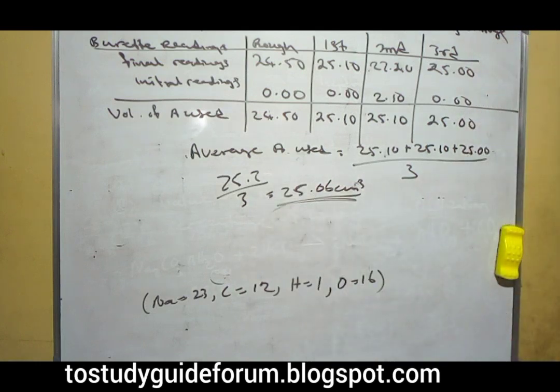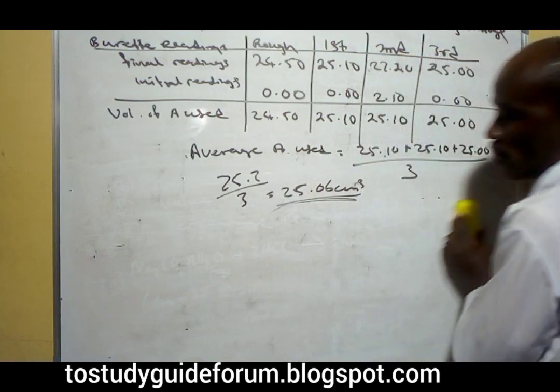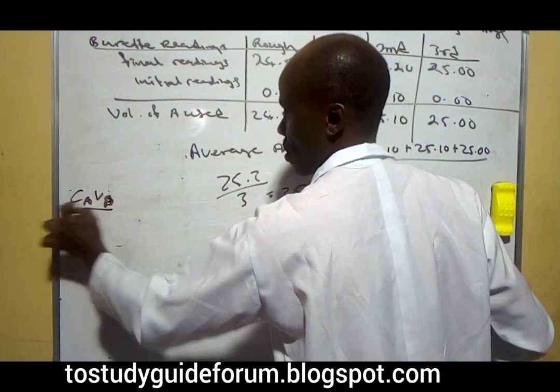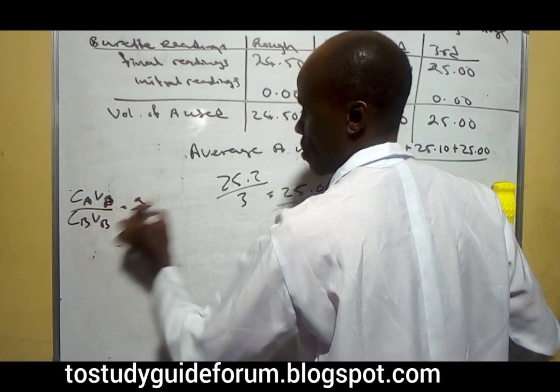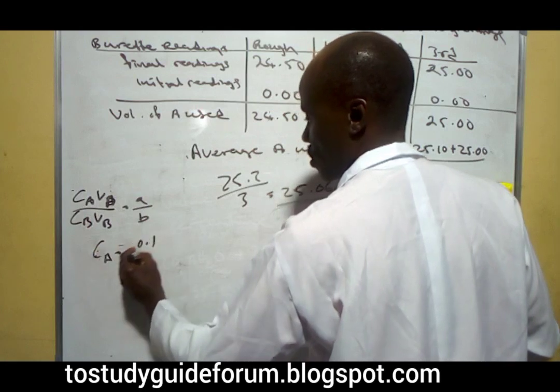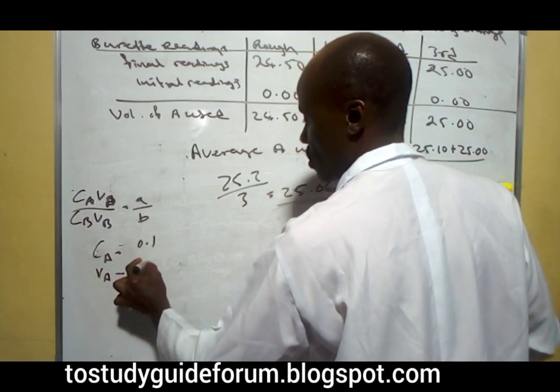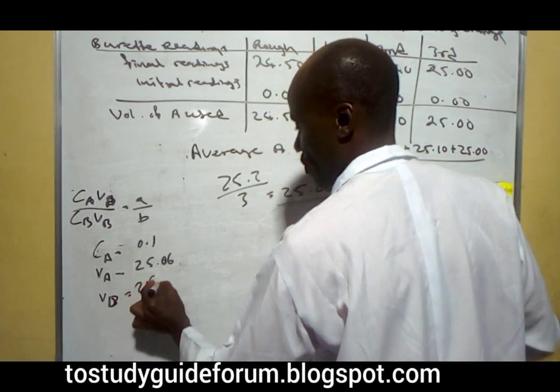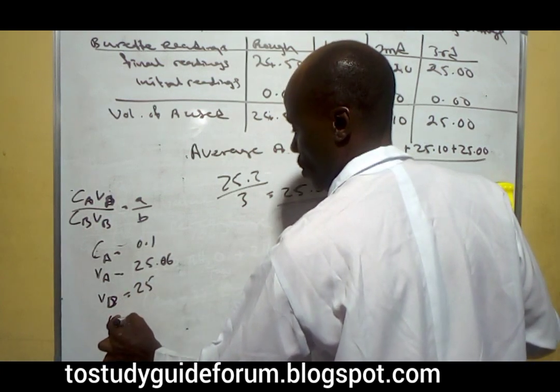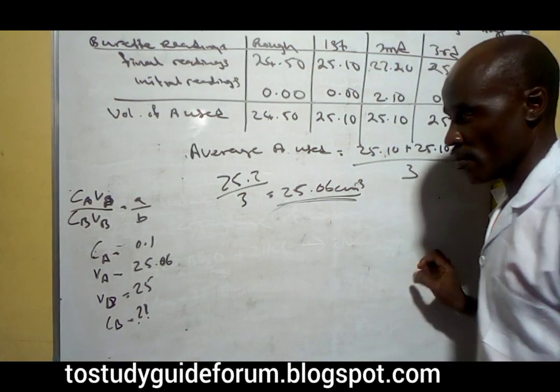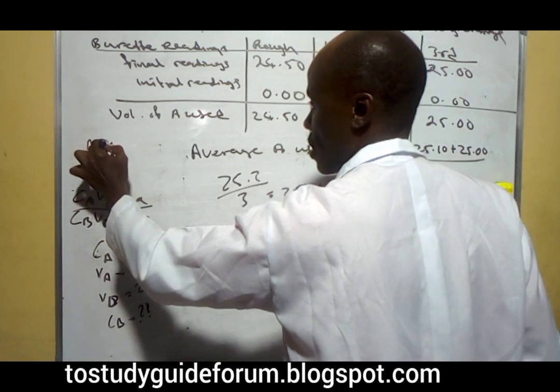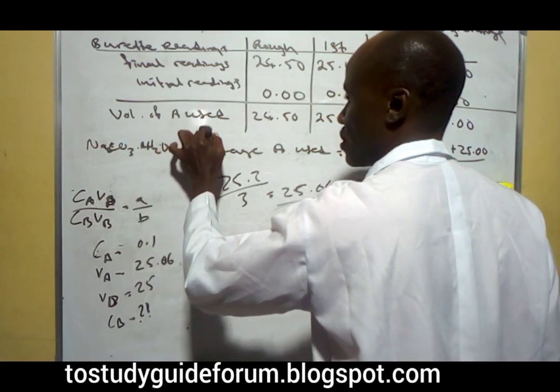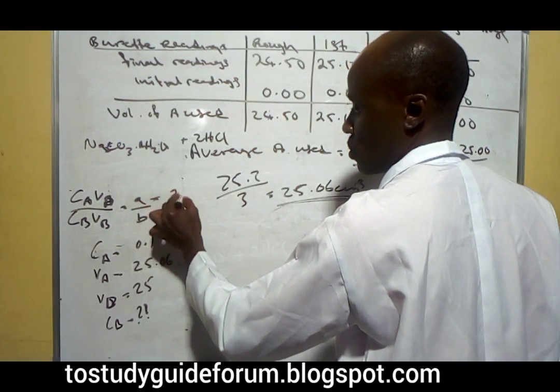The first question says we should calculate the concentration in mole per dm³ of B. We have this relation to use: CA is 0.1, volume here is 25.00, and volume of B is 25, and concentration of B is what we are looking for. From the equation, we notice that A is equal to 2 and B is equal to 1.